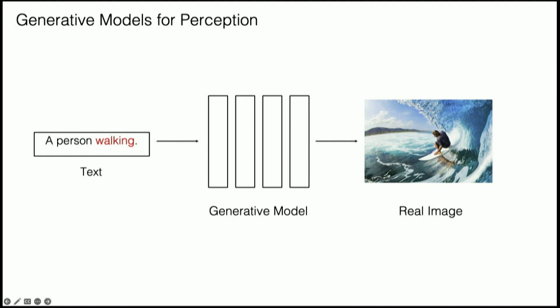You can also use this for action understanding. Imagine you have an image of a person surfing. By prompting and writing 'a person walking,' you can see if you can synthesize the given image — and you can't. But by correctly entering the right action, 'a person surfing,' you can correctly synthesize the image. This gives you a free-form way to understand a variety of images. You can take an image of your bedroom and get a text description of what's actually in it directly from these generative models.